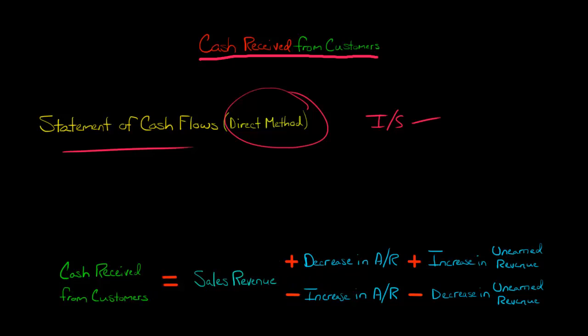There's another account that we might have to deal with: unearned revenue. If the company has some unearned revenue, think about it. If they get cash from customers but they haven't earned the revenue yet, we're going to have an increase in unearned revenue, and that's cash received from customers as well. So that should also be added to sales revenue. Conversely, if there's a decrease in unearned revenue, then we want to be subtracting that. Sometimes you'll also see advances from a customer, like they put down a deposit on a car or something like that. You can think about that as similar to unearned revenue.